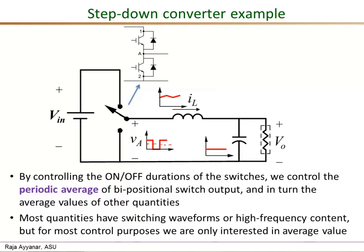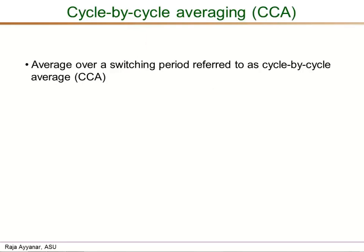This in turn controls the average values of several other quantities. Similar to the va switching waveform, the other waveforms like the output voltage, the inductive current, or the input current can be switching waveforms, or at least they can have significant high-frequency content. Still, from a controls point of view, what we are really interested in is the average values of each of these quantities. When I say average, I specifically mean the periodic average, or the average over one switching period, and we call this cycle-by-cycle averaging, or CCA for short.